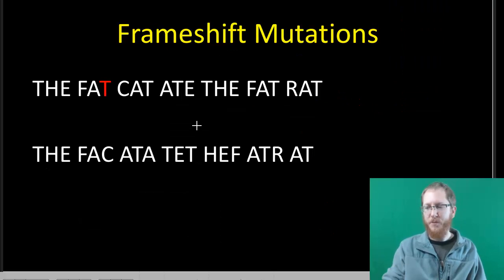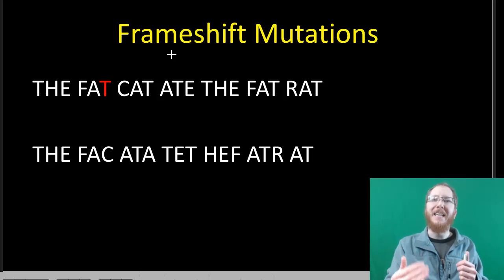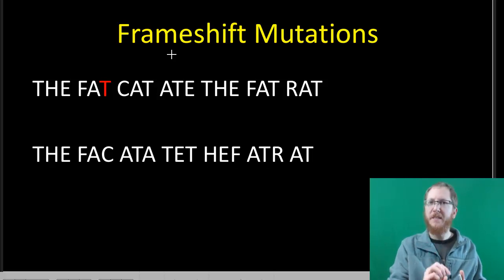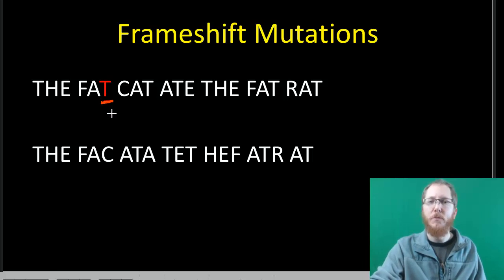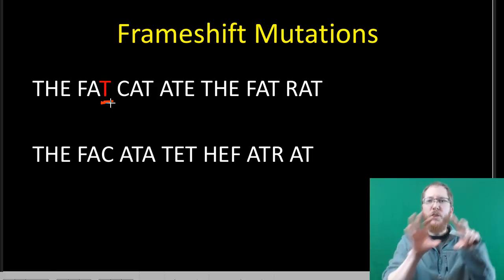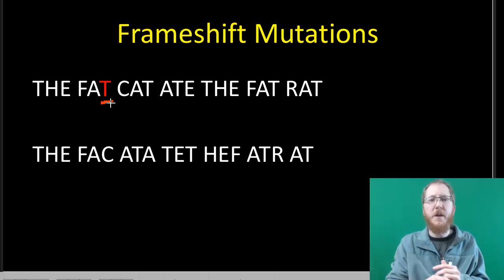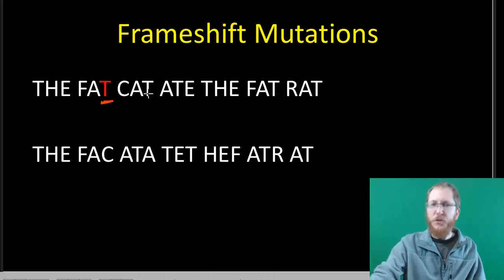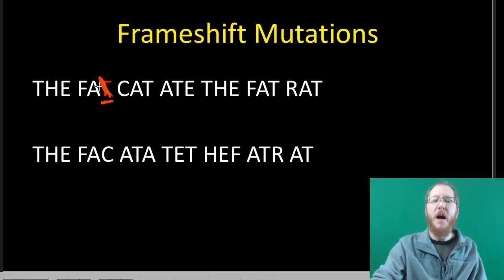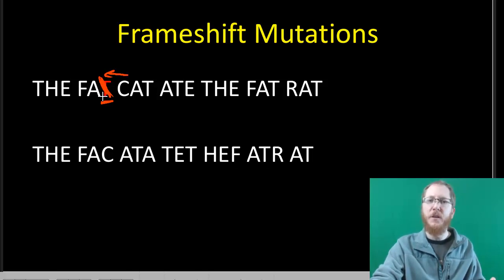The other type of severe mutation we have is a frameshift, where if we add or delete nucleotides, like one or two of them, because remember we read in threes. If I don't add or delete them in threes, in which case I only affect one amino acid, but if I were to add or remove just a single nucleotide or just two, because I have to read it in threes, everybody else has to shift. We shift our reading frame. That's why it's called the frameshift, because we have to read it in threes. If I get rid of this T in the fat cat ate the fat rat, this is just an analogy, if I do that, everybody else has to shift over because I have to read it in threes.